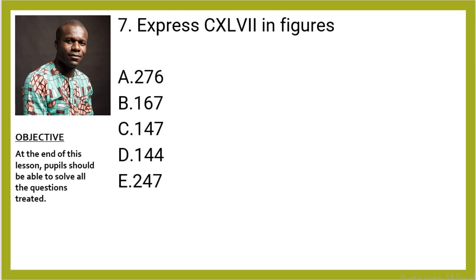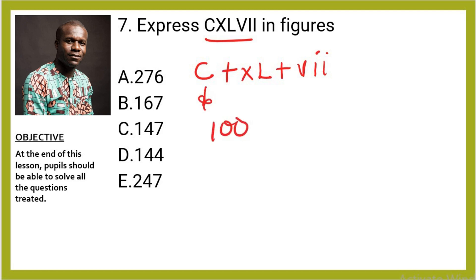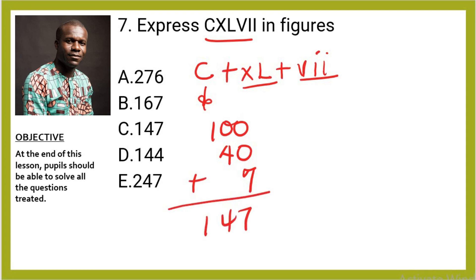Question 7: Express CXLVII in figures. Break it up: C + XL + VII. C is 100, XL is 40, VII is 7. Bring down 7, bring down 4, bring down 1 — the answer is 147. The right option is C.